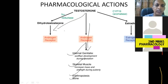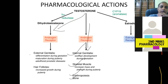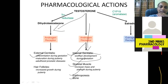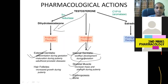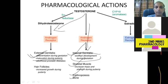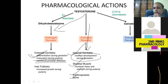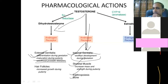DHT is mostly responsible for secondary sexual characteristics. Testosterone causes development; DHT causes differentiation and maturation of external genitalia during puberty. In adulthood, DHT leads to prostatic disease — specifically BPH.